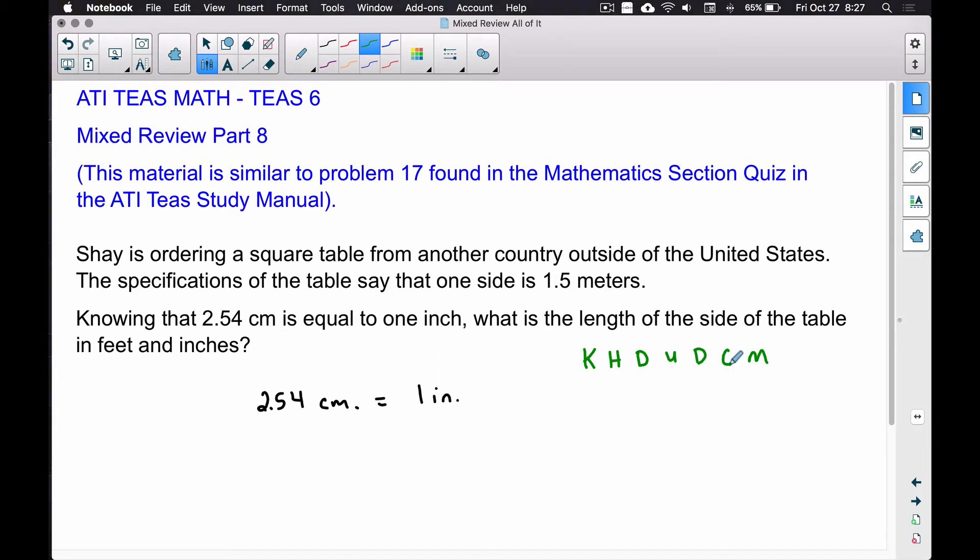What we're trying to do is take 1.5 meters - that is the unit because we don't have a kilometer or decimeter, we have a plain old meter, so that's the unit. We want to convert that to centimeters. So we're starting at the unit, 1.5 meters, and we're going to move one, two places to the right. What we're going to do with our 1.5 meters is move that decimal two places to the right, and that's going to convert it to centimeters.